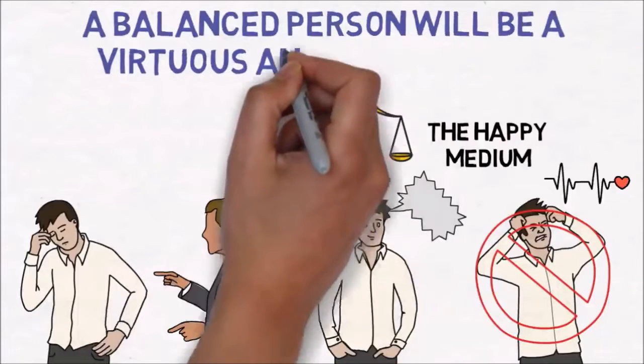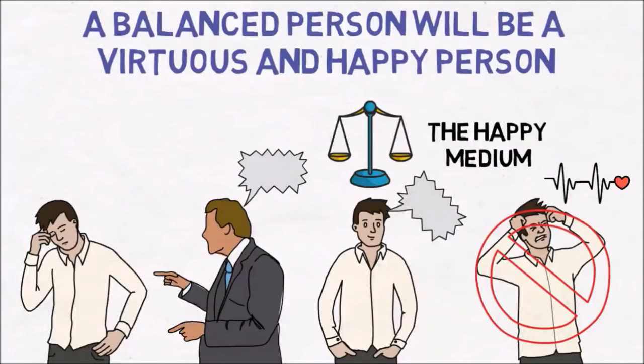A balanced person, Aristotle argues, will be a virtuous and happy person. They have found the golden mean.